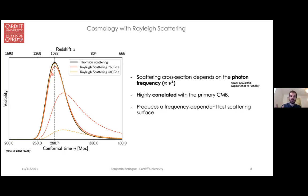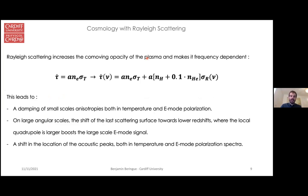By combining Thomson and Rayleigh scattering, including Rayleigh scattering produces a small shift in the peak of the visibility function, and this shift is frequency dependent — at higher frequencies the shift is slightly larger. The main takeaway is that Rayleigh scattering produces a frequency-dependent last scattering surface. It also globally increases the comoving opacity of the plasma — the inverse of the mean free path — because by including Rayleigh scattering we have more scattering events, so photons travel shorter distances between scatterings.